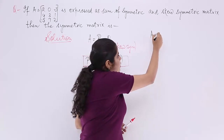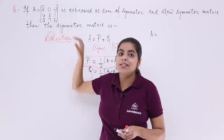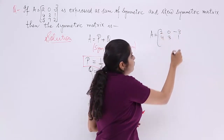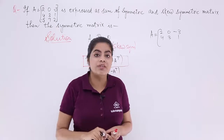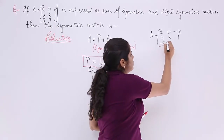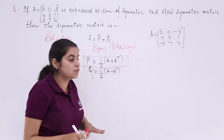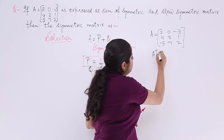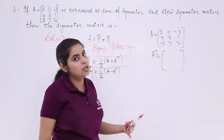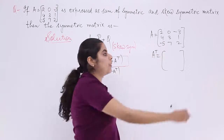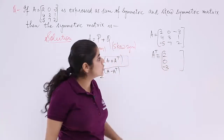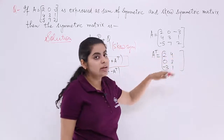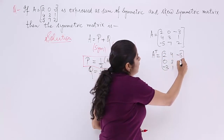Let's write down A first. A is the matrix with rows: [2, 0, −3], [4, 3, 1], [−5, 7, 2]. For Aᵀ, we interchange rows and columns: the first row [2, 0, −3] becomes the first column, the second row [4, 3, 1] becomes the second column, and the third row [−5, 7, 2] becomes the third column.